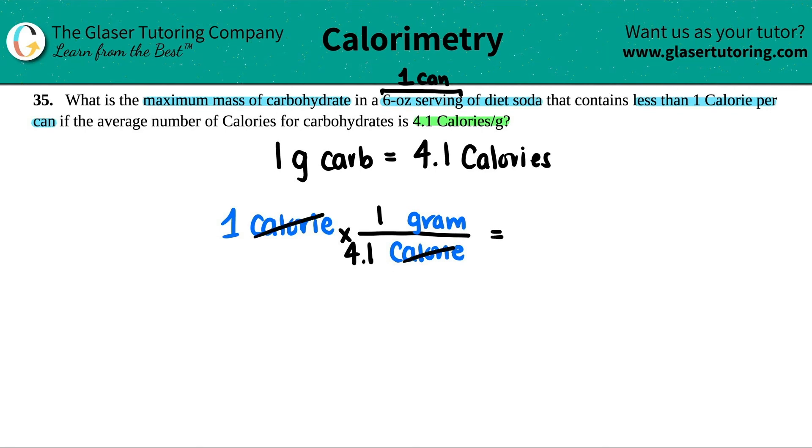So, all we're doing is basically one divided by 4.1, and I guess two sig figs, does it really matter? No. So, I'll say 0.24, and that's how many grams of the carbohydrate in the diet soda, and that's it, guys.